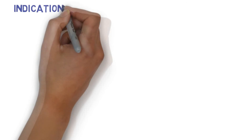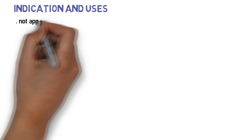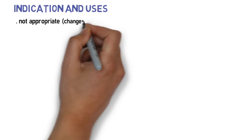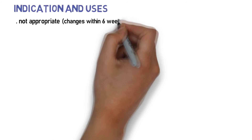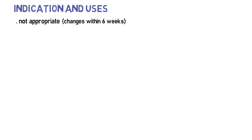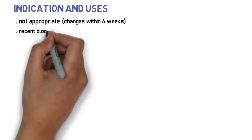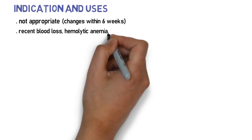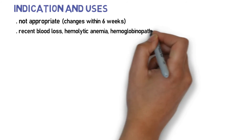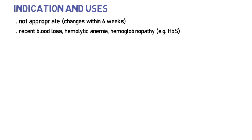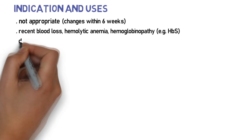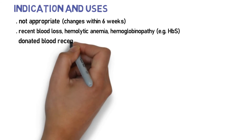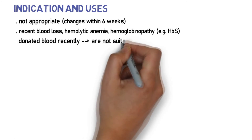Glycated hemoglobin measurement is not appropriate where a change in diet or treatment has been made within six weeks. People with recent blood loss, hemolytic anemia, genetic differences in the hemoglobin molecule, hemoglobinopathies like sickle cell disease, or those who have donated blood recently are not suitable for this test.